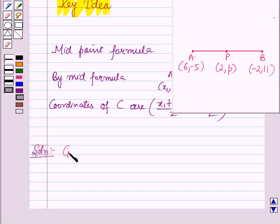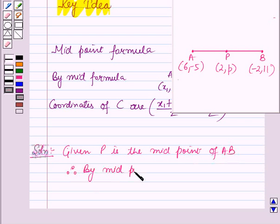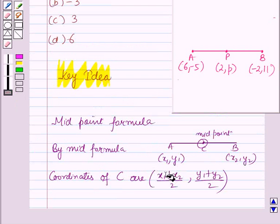So given P is the midpoint of AB, therefore by midpoint formula we can find the coordinates of the midpoint.